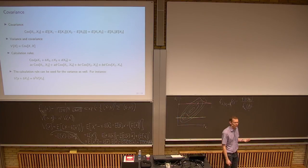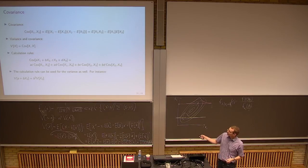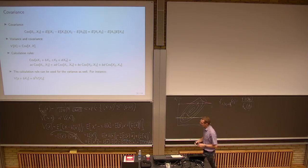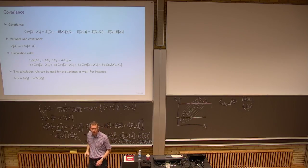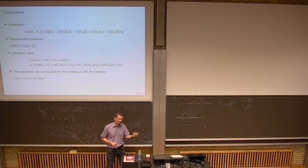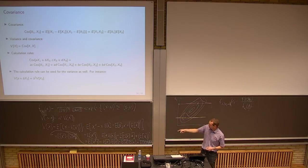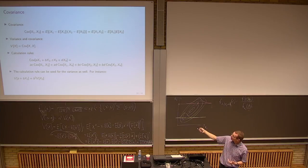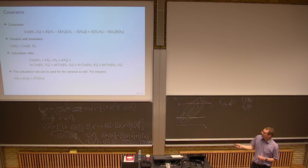The covariance between two random variables has the same structure as the variance, but instead of squaring (x minus E[x]), you multiply (x₁ minus E[x₁]) by (x₂ minus E[x₂]). It measures how x₁ and x₂ co-vary. You can do the same calculation walkthrough to get that it's the expectation of the product of the two minus the product of their expectations. And the covariance of x with itself is just the variance.